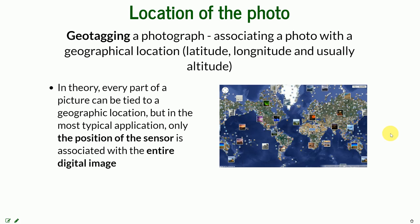So in theory, every single part of a picture can be tied to a geographic location. But in most typical applications, only the position of the sensor is associated with the entire image. So if you're taking a photo of yourself or a building, the geotagged picture reflects where you are standing, not where the building is standing or the object that you are taking a picture of.